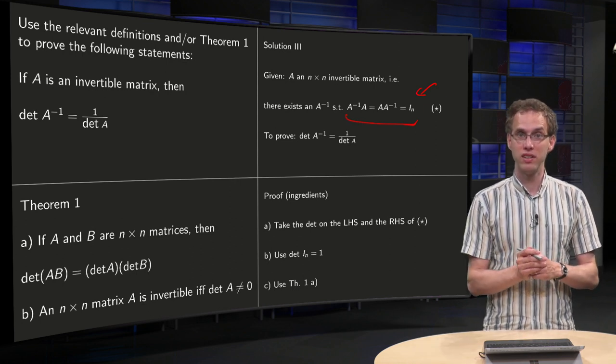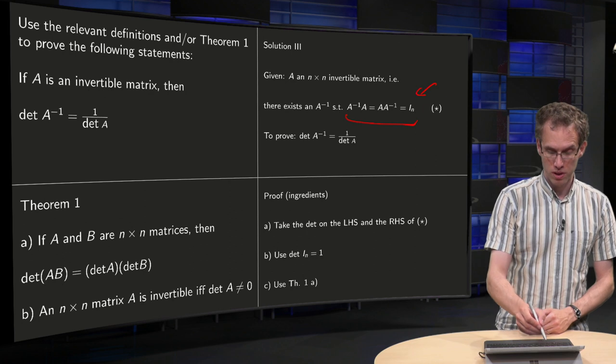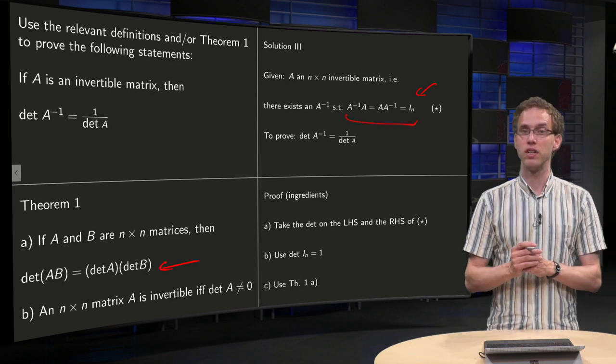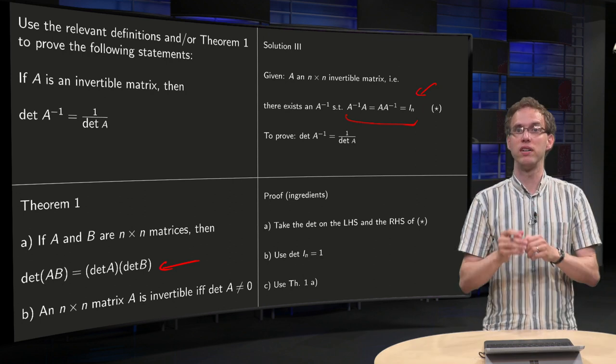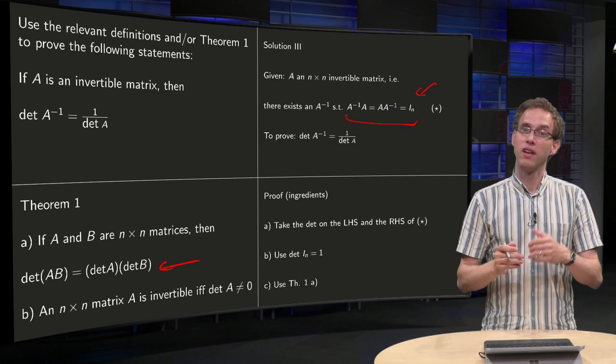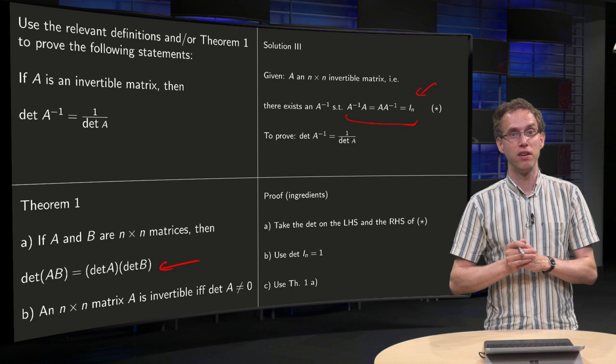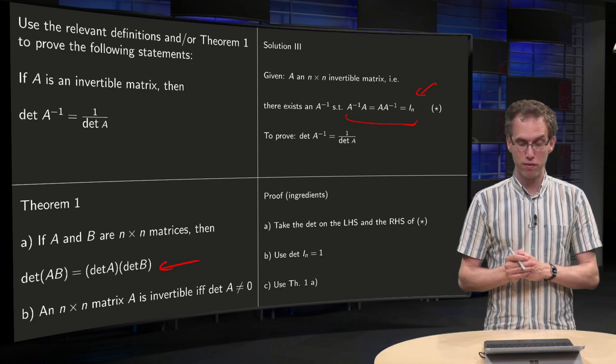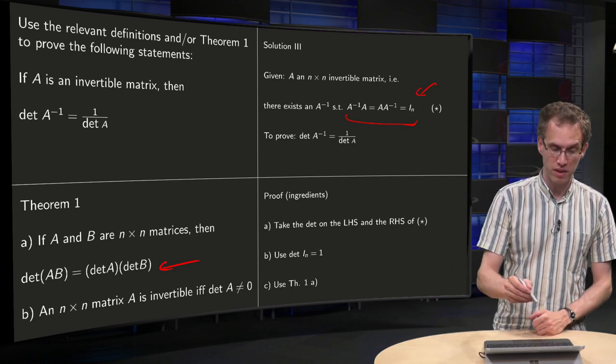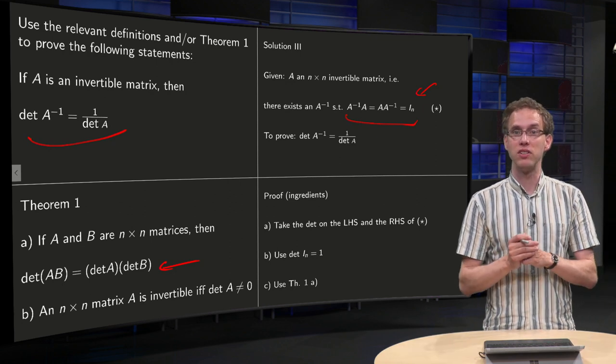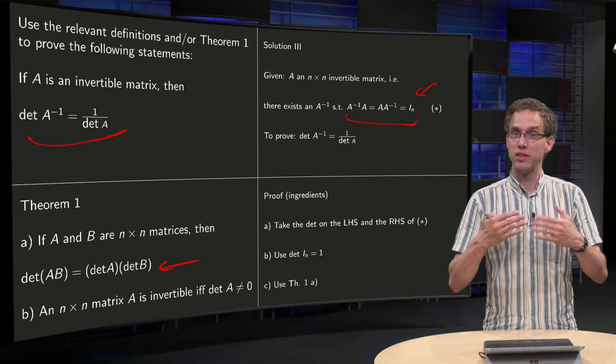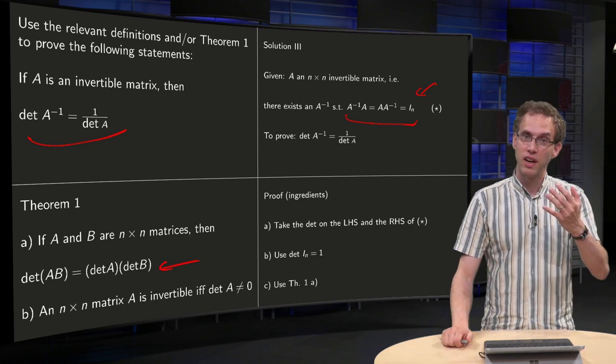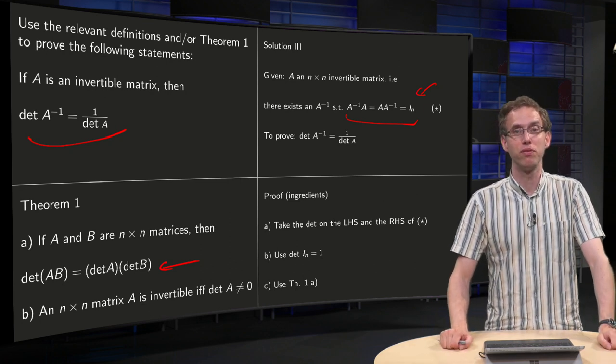And the third ingredient: you need to use Theorem 1, statement a. You have det(A times A inverse), you can split those apart in det(A) and det(A inverse), and then you get det(A) times det(A inverse) equals 1, and you get the desired formula for det(A inverse) over here. So that's the third ingredient. So your proof should contain those three ingredients, and then you have a correct proof of the statement.